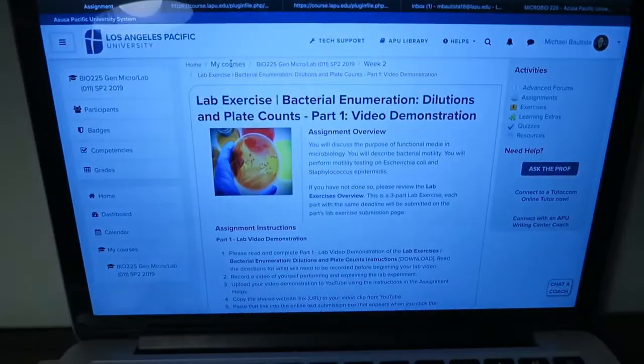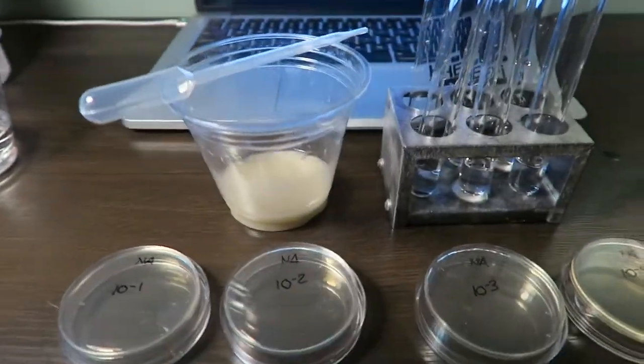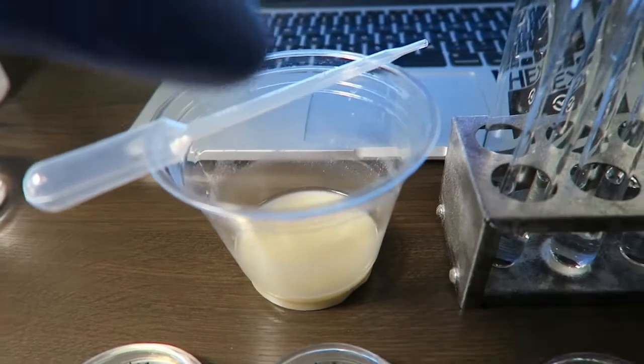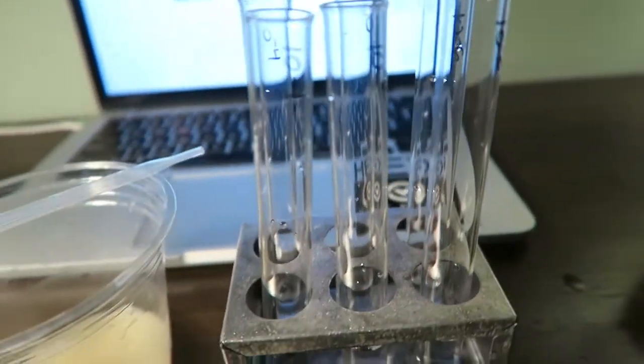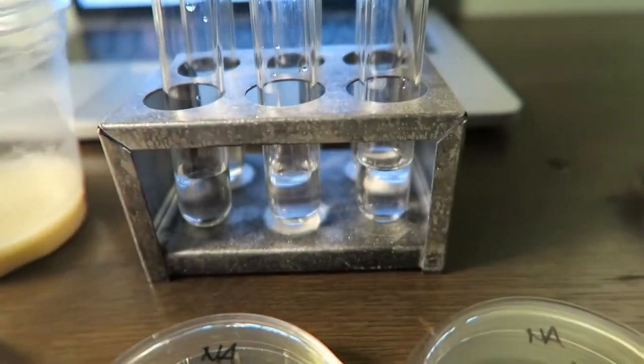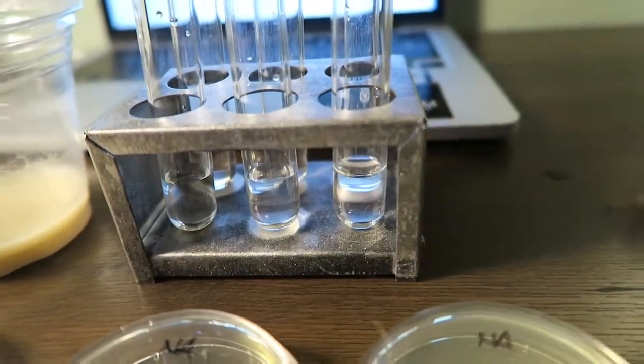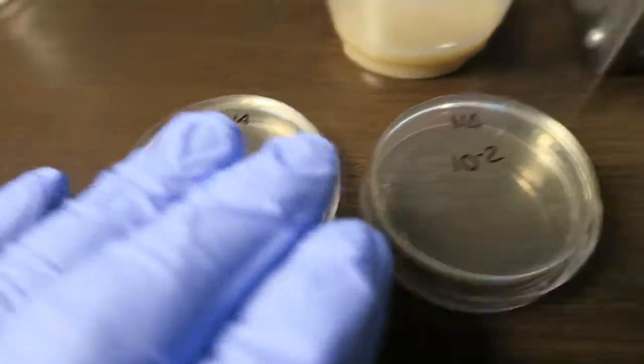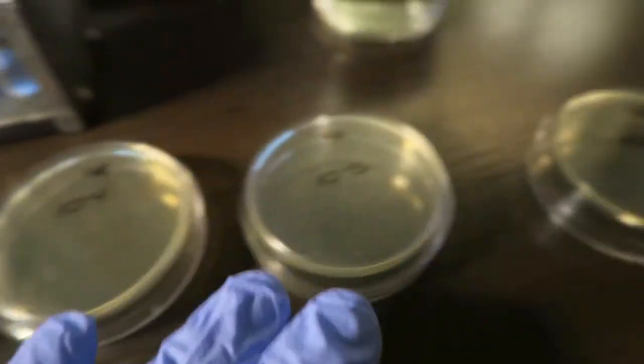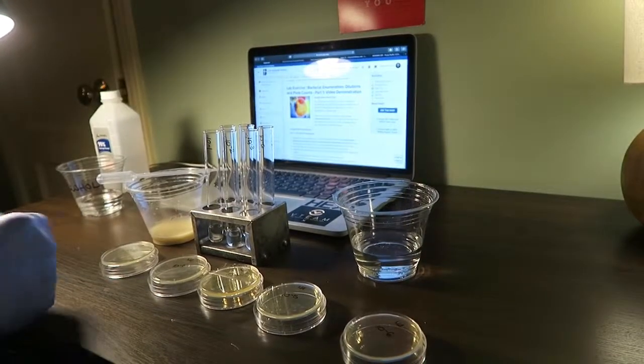We have the Saccharomyces cerevisiae in this cup, and we have six test tubes already with 2.25 ml of distilled water. And then we have the agar plates, six of them. Okay, so I'll be set up right here. Let's get these going.